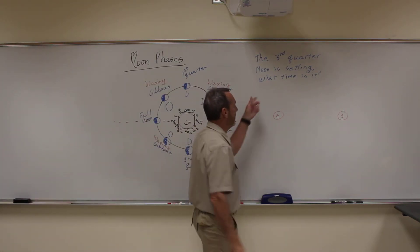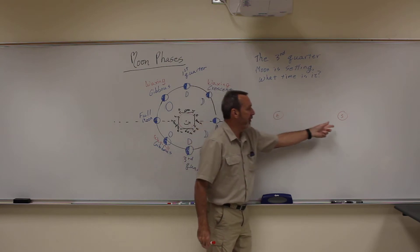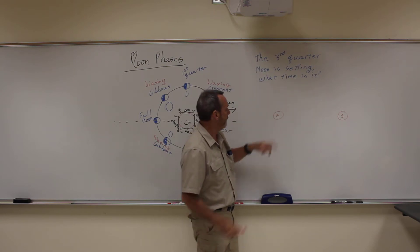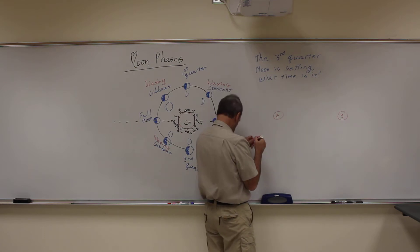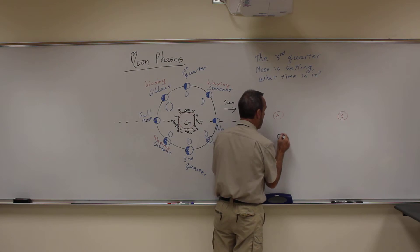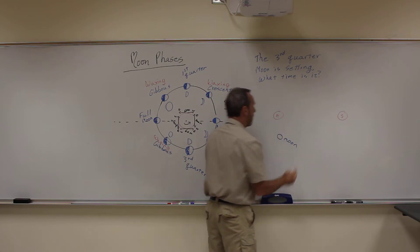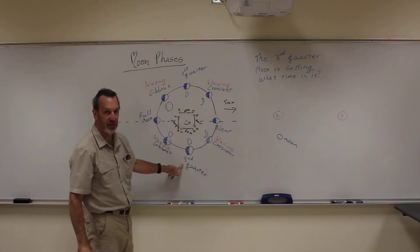So the third quarter moon is setting and I say, what time is it? Well, I'm going to draw my picture of the Sun and the Earth just like normal, right here. And then I know where the moon is, the moon's third quarter, so the moon has to be in this position down here. Because I have this chart memorized, I know the third quarter position is down here.